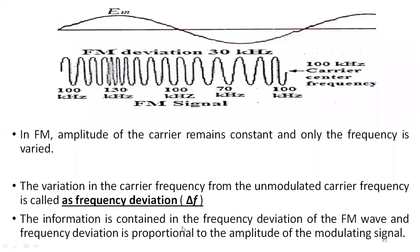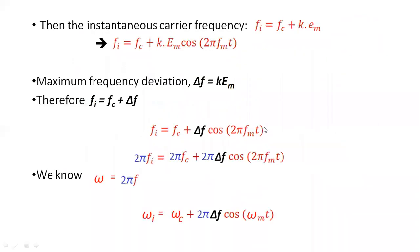The information in an FM wave is contained in the frequency deviation. Frequency deviation is proportional to the amplitude of the modulating signal — the higher the amplitude, the more the carrier frequency deviates. The information is transmitted through this frequency deviation in the carrier, and we can express this in mathematical format.